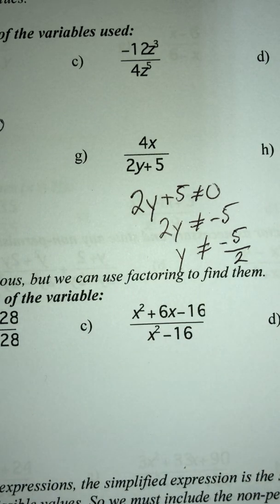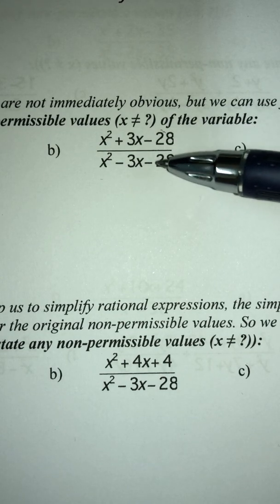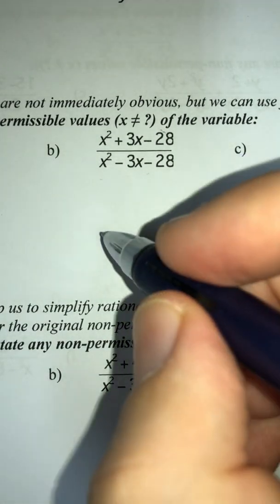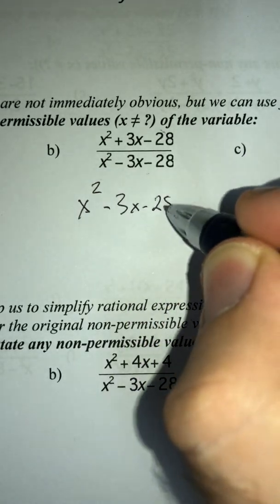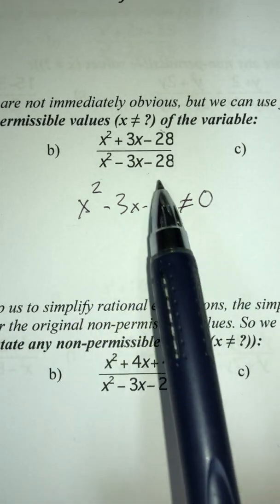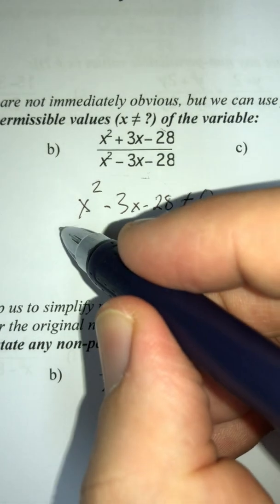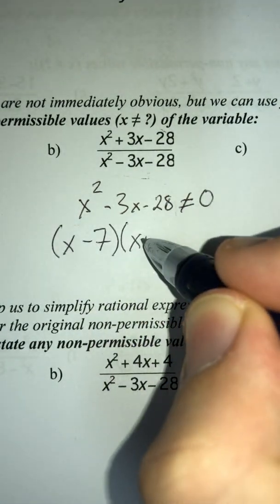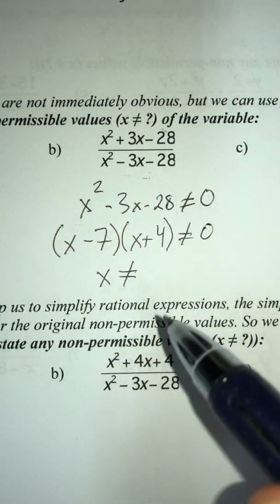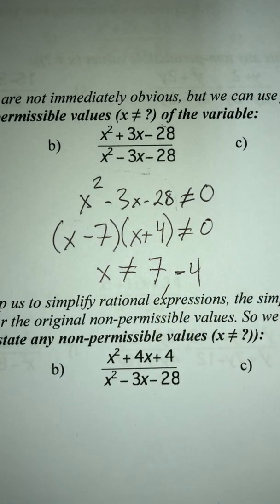These ones are pretty straightforward, but what if I gave you something like this? The concept is exactly the same — the denominator just can't equal zero. So x² − 3x − 28 cannot equal zero. That might seem tricky, but we're going to dive back into factoring. What two numbers add to negative three and multiply to negative 28? That would be (x − 7)(x + 4). So x cannot equal 7 and x cannot equal negative 4.